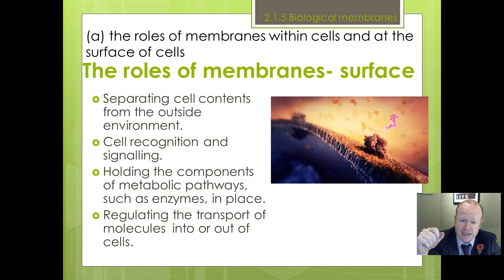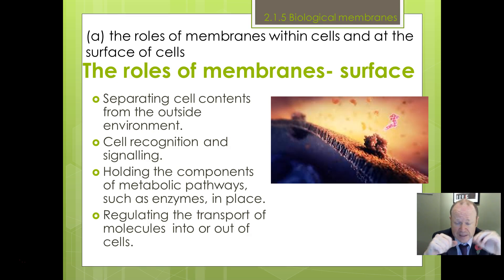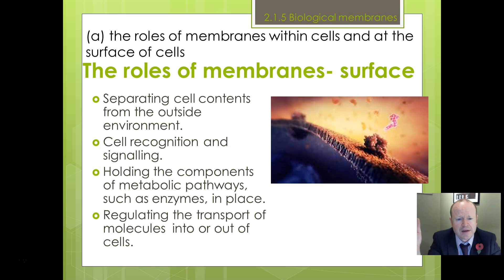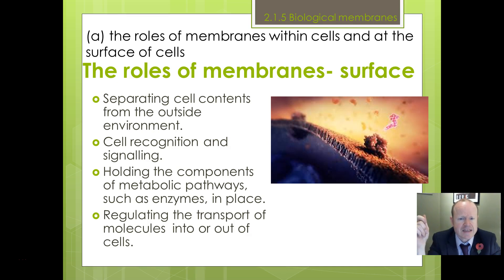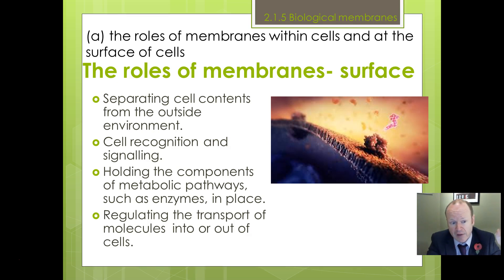For example, it might have a receptor for a particular hormone, so that when a hormone travels around the body, it attaches to a cell and makes the cell release or act in a certain way. It keeps the components of metabolic pathways in place — we'll talk about that more in a moment when we look at chloroplasts and mitochondria. And the classic function: regulating what goes in and what goes out of a cell.